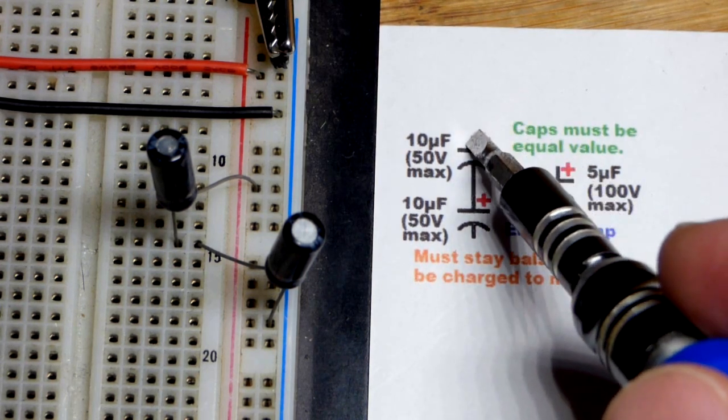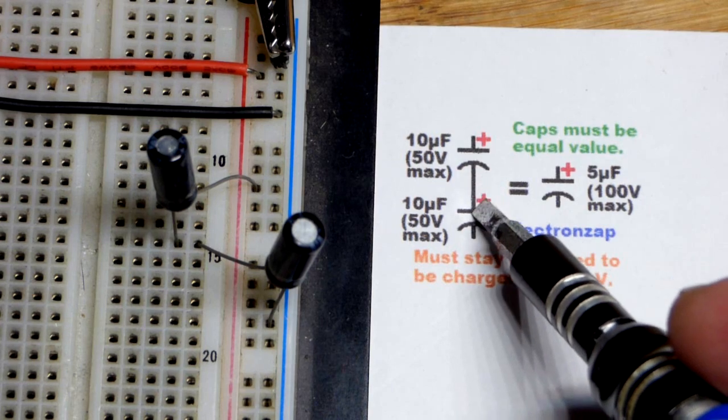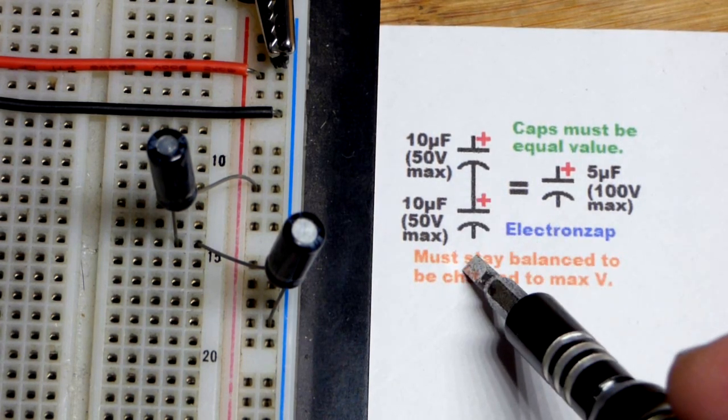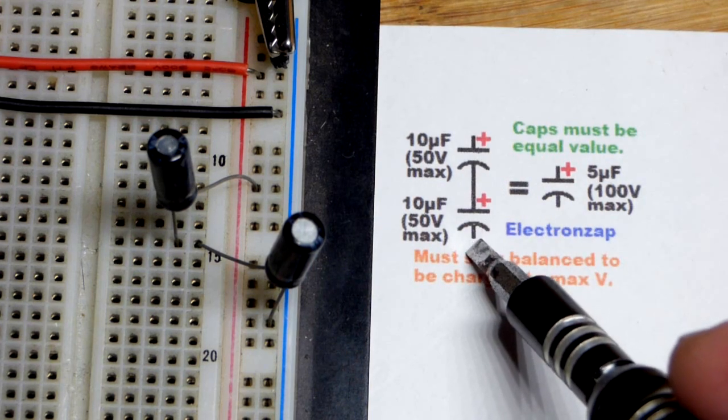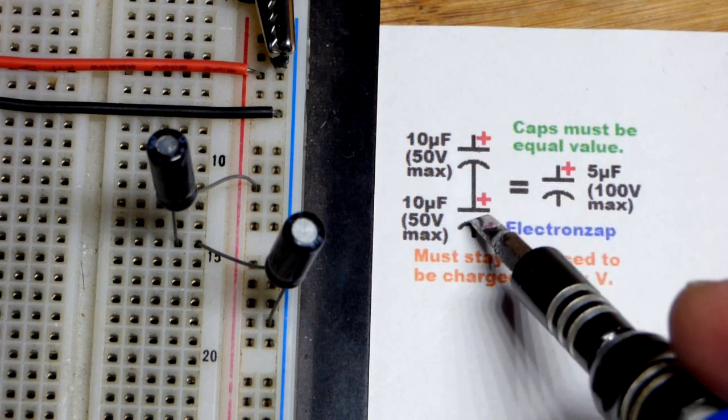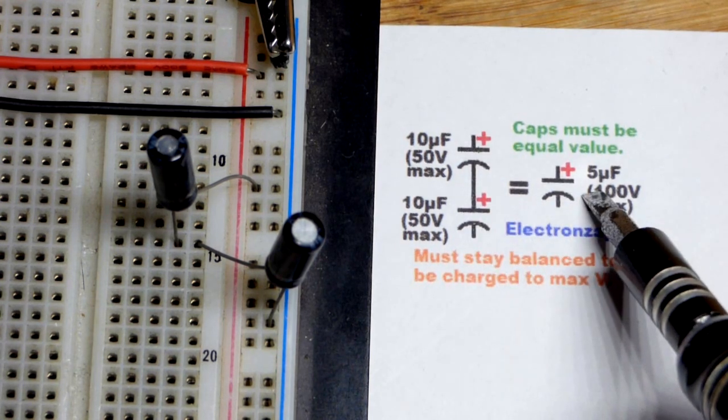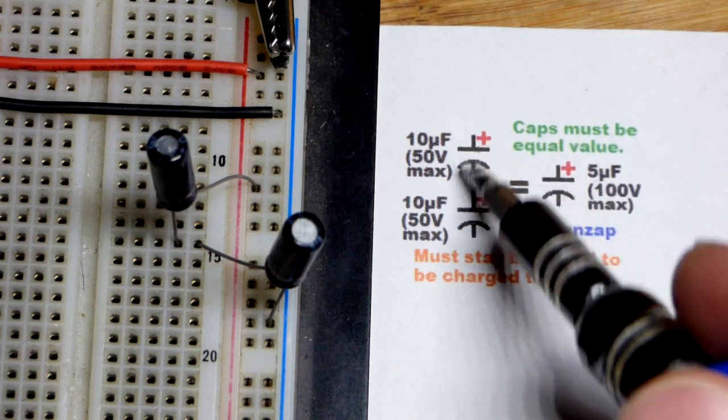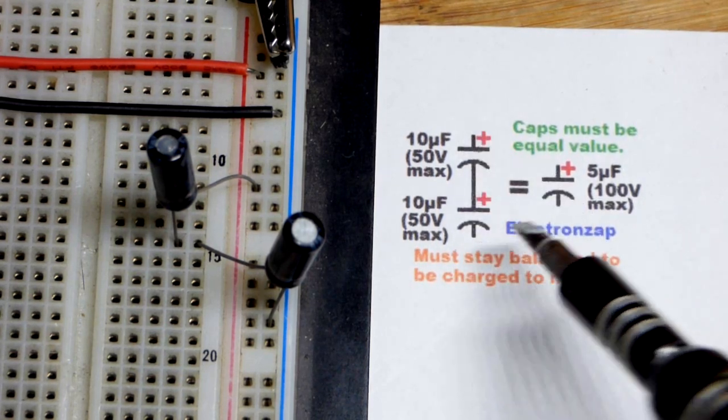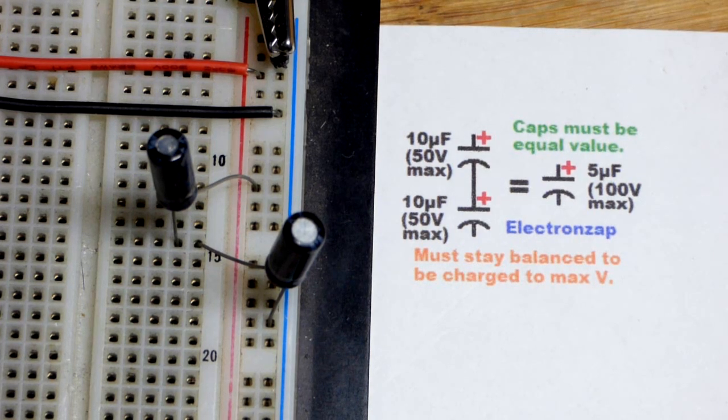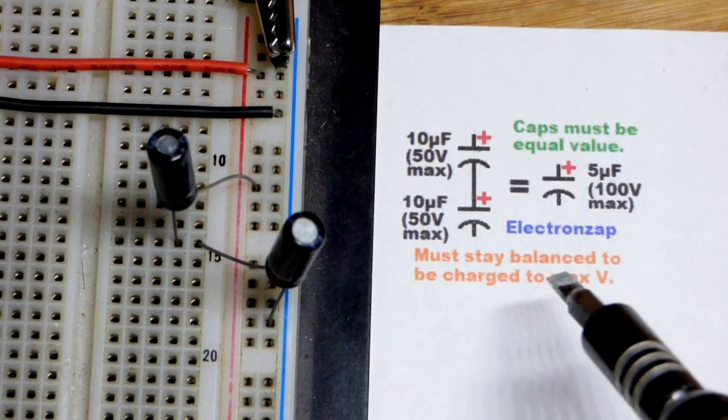But you notice here, current flows through everything in series the same. So you put one milliamp current into one capacitor, there's also one milliamp current going into the other capacitor. So they're both charging, they're both getting a voltage rise, and their voltage rises add up. Ultimately it's like having a smaller capacitor because the voltage is going to rise twice as fast because it's a single current source.